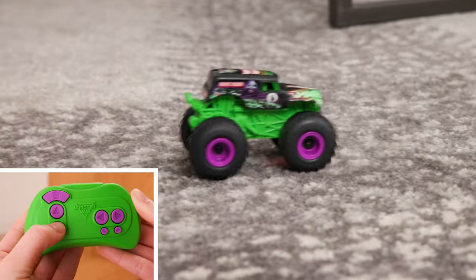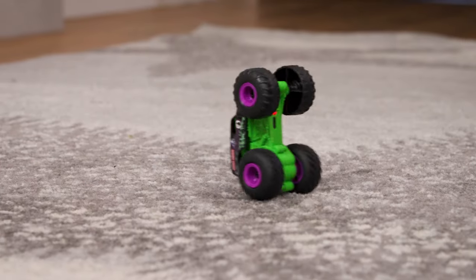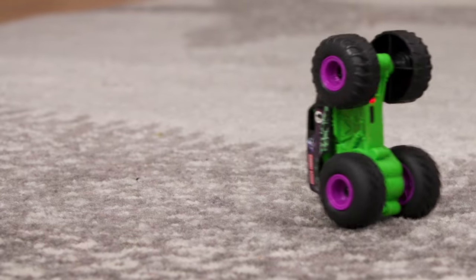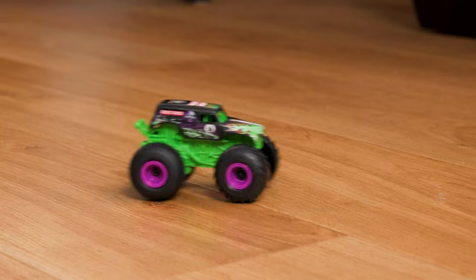Drive in reverse, then hit the Turbo Boost button to pop into a wheelie. Grave Digger's wheels need traction to do the Turbo Boost wheelie. Doing the stunt on a carpet is recommended, otherwise the wheels could spin.